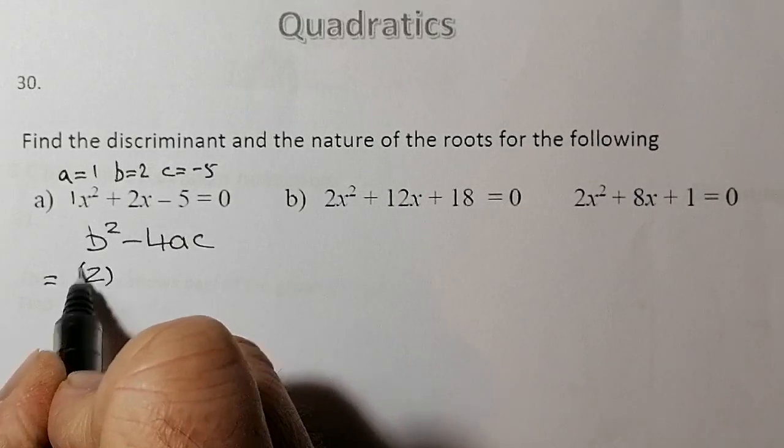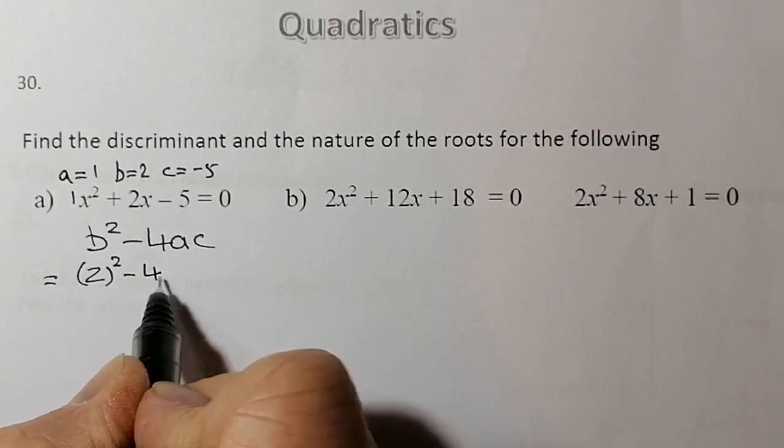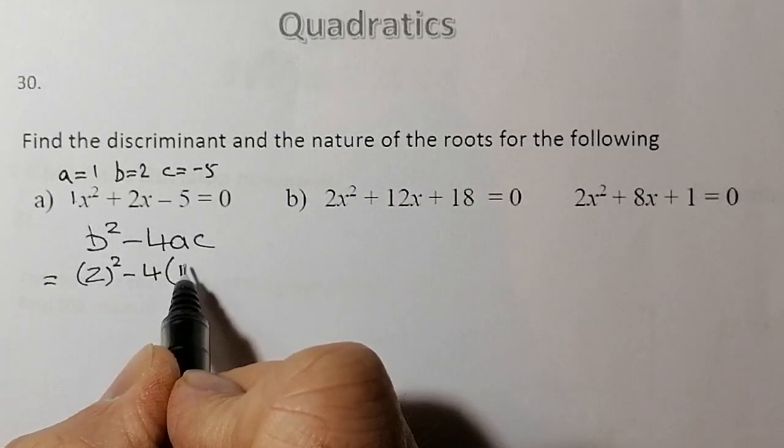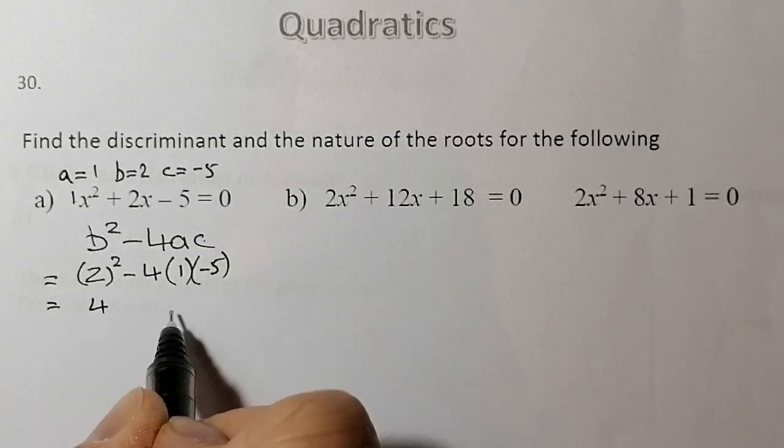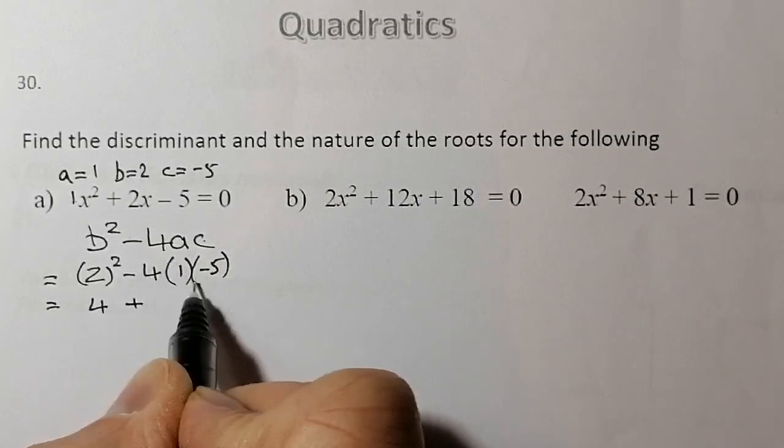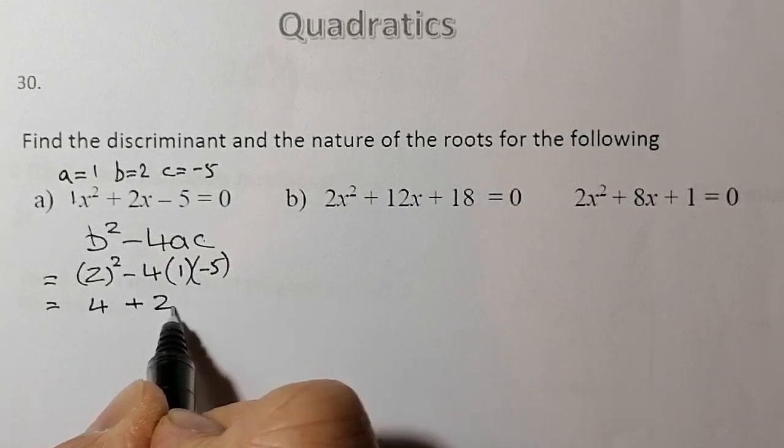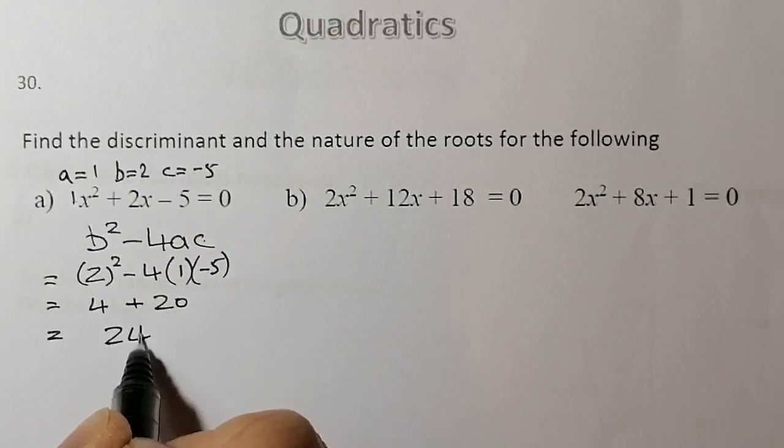So I've got 2² for b, take away 4 times a, which is 1, and times c, which is -5. So that's going to give me 4. That's going to be a plus, because I've got two negative numbers multiplied together, plus 20. That should give me an answer of 24.